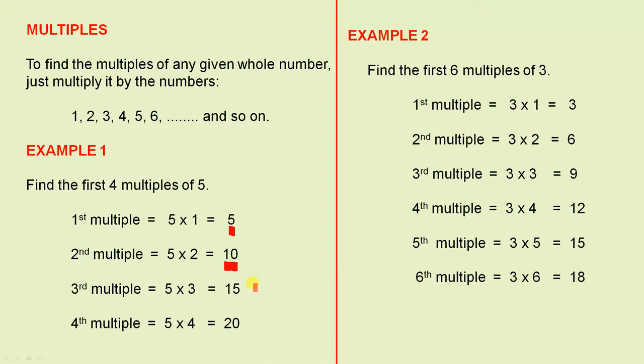The third multiple is 5 times 3, which is 15. And the fourth multiple is 5 times 4 equals 20.